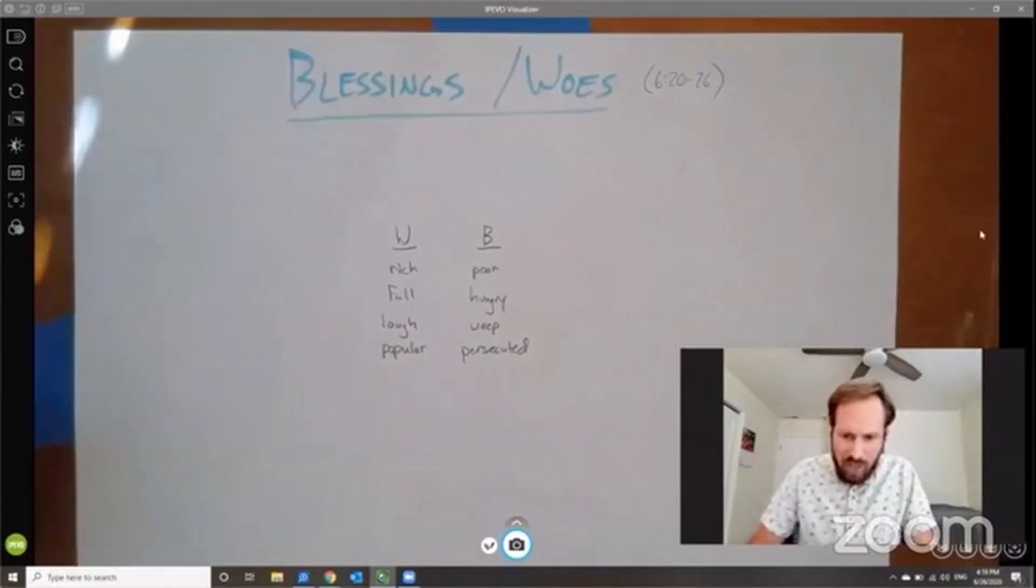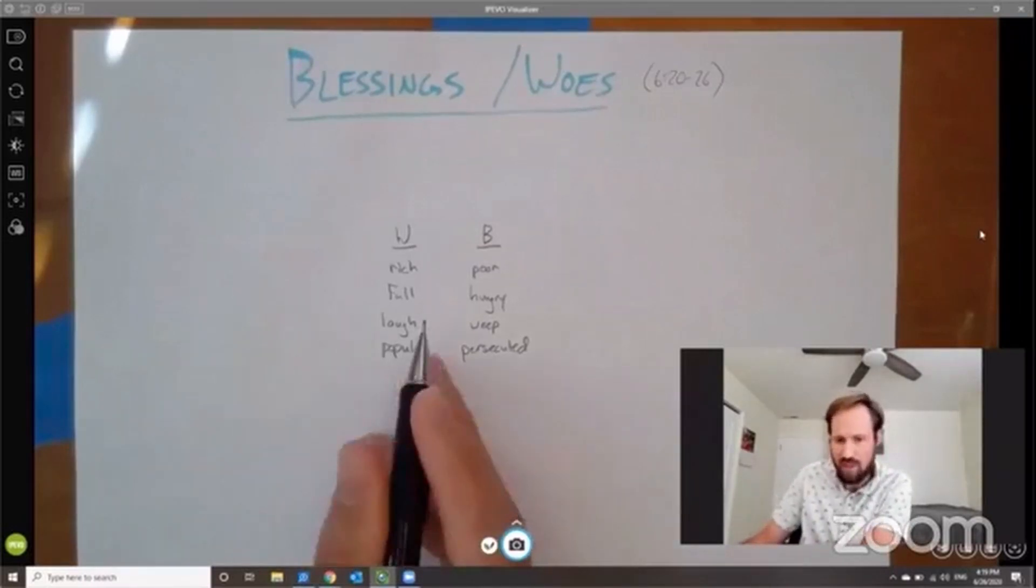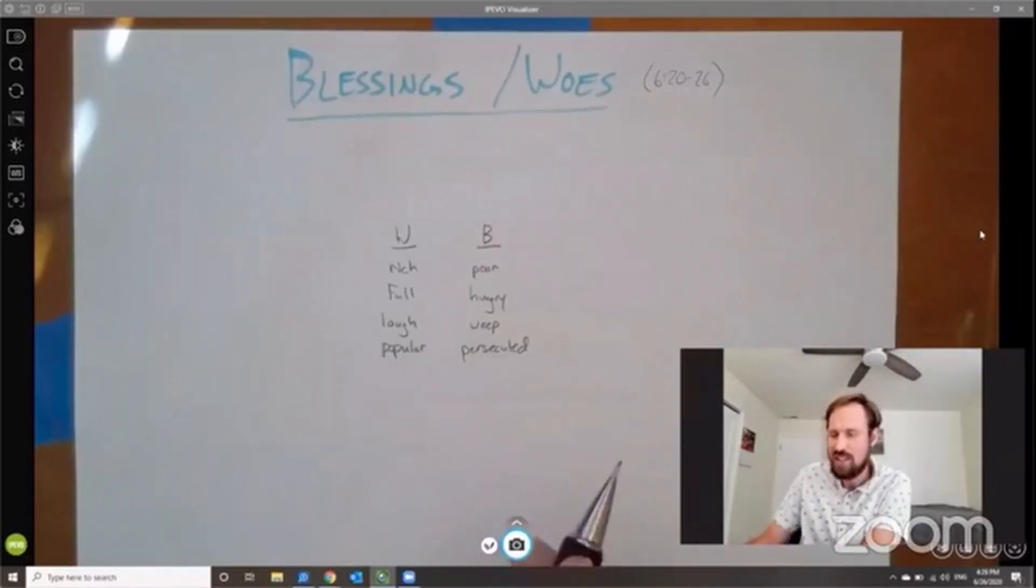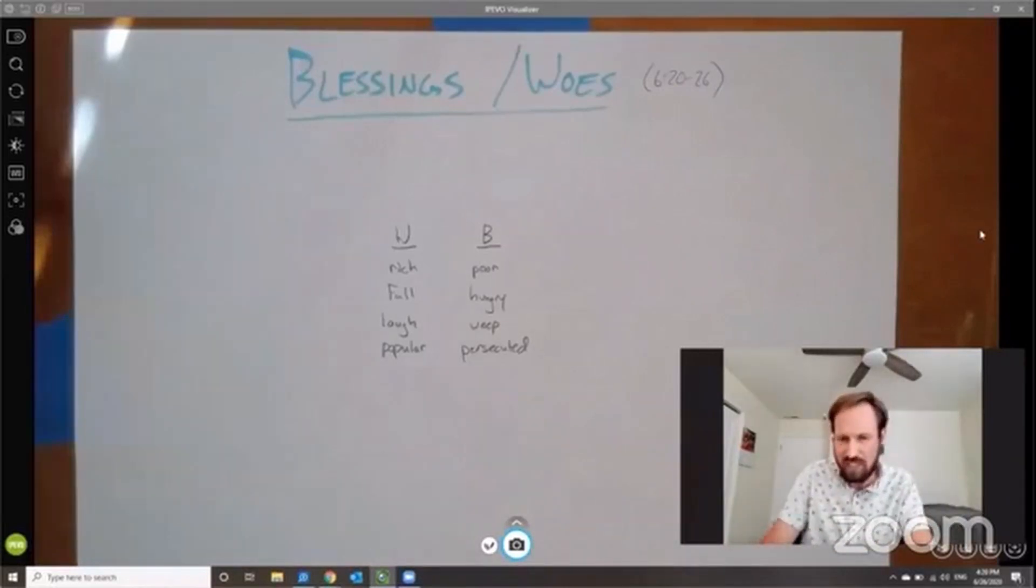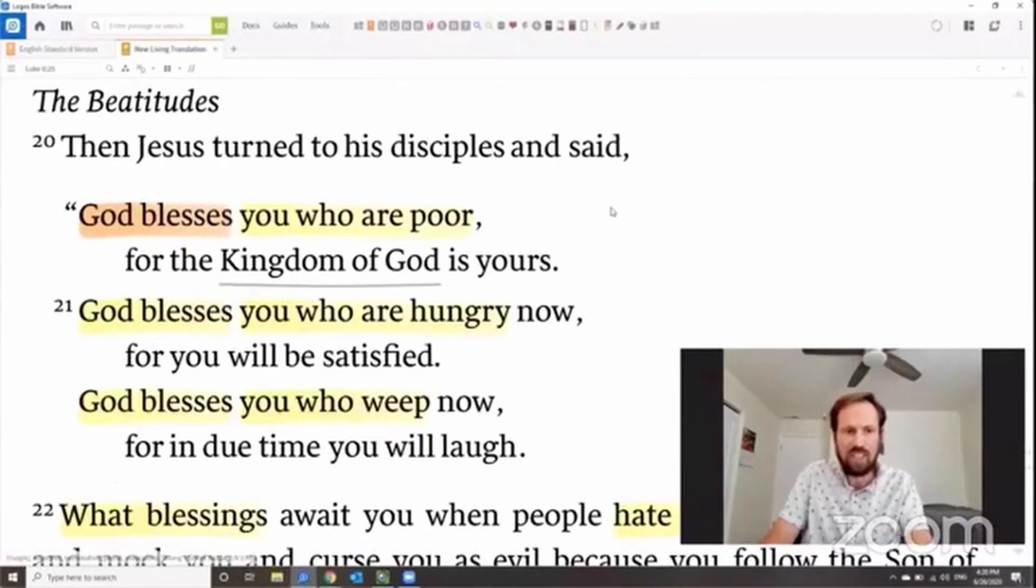They're typically called Beatitudes, right? We know them by the name Beatitude, and that comes from the Gospel of Matthew predominantly. Because what's interesting about these lists is how Matthew differs from Luke. But let's take a look first at the Beatitudes as they're found in Luke. And let's read them in the New Living.